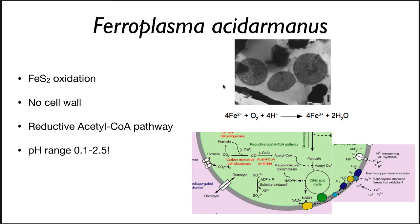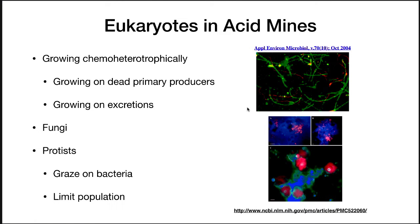Another organism present is Ferroplasma acidarmanus, found in many acid mines — about 80% of them. It uses the reactions discussed previously to oxidize iron pyrite and release sulfuric acid. Interestingly, this organism has no cell wall. It uses a reductive acetyl-CoA pathway to synthesize its carbon: taking CO2, running it through this pathway into acetyl-CoA, and then into central metabolism. It lives at pH ranges of 0.1 to 2.5 — very, very acidic.